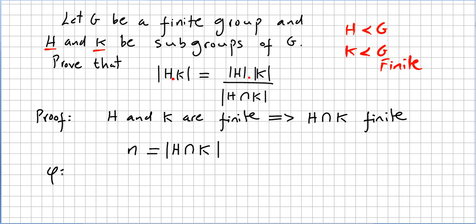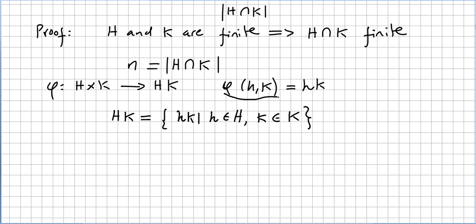Let us define a map φ from H times K. The map will be of the form φ(h, k) = hk. HK will be the set of products hk such that h is in subgroup H and k is in subgroup K. It is pretty obvious that φ is onto HK.